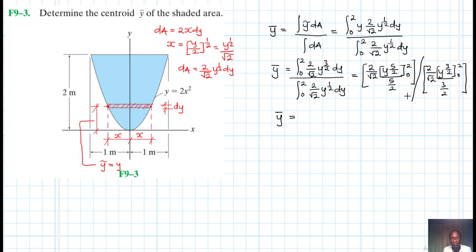So this just becomes 2 to the power 2.5 divided by 5 over 2, then divided by 2 to the power 1.5 then divided by 1.5.